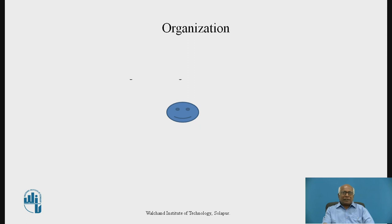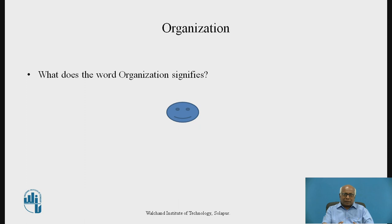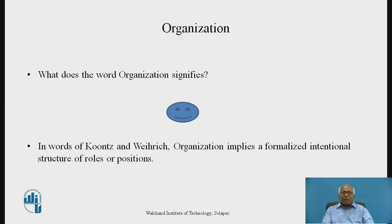Let us first try to understand what we mean by the word organization. We are using this word very often, but what does it signify? It is a group of people, but is it just a crowd of people gathered somewhere or gone on some tour? No. Though it is a group of people, it is formally bound in some structure. In the words of famous authors Koons and Verich, organization implies a formalized intentional structure of roles or positions.